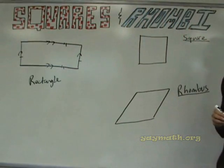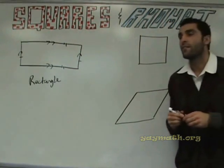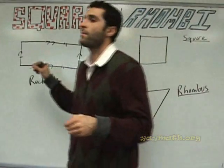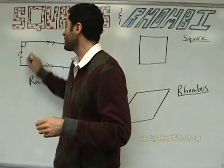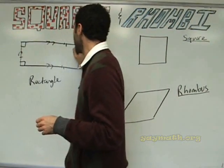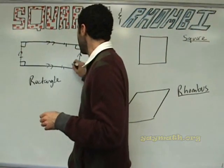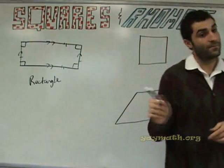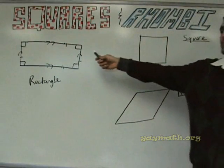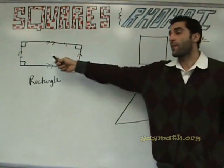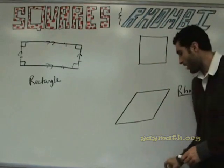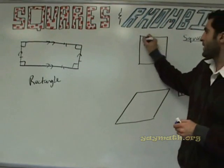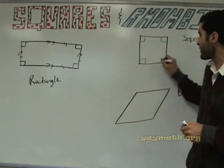What else? All angles are equal — and what are they? Ninety degrees. Very good. So all these are equal. That's the same in a rectangle. We're talking about similarities between a rectangle and a square. All angles are equal and they're all ninety. Okay, so that applies.